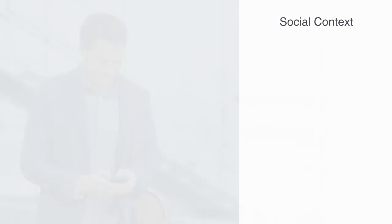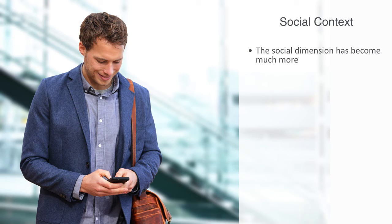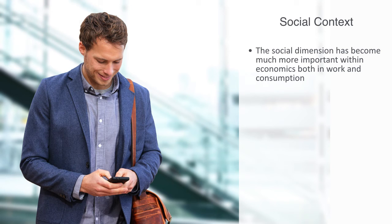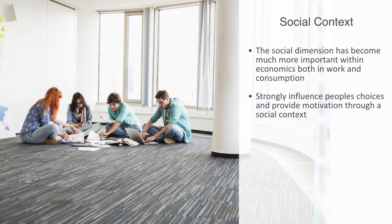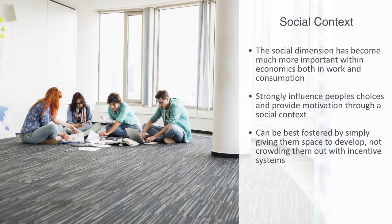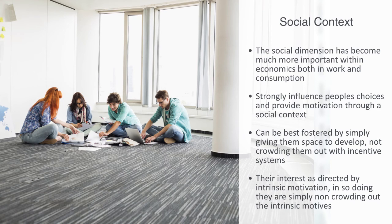The social context within which choices are made is just as important as the physical. With the advent of social networking, the social dimension has become much more important within economics, both in work and consumption. By simply connecting people and making social information available, this can strongly influence people's choices and provide motivation through a social context. Intrinsic motives are self-directional and can be best fostered by simply giving them space to develop — that is, not crowding them out with incentive systems. We see some companies like Google who, instead of offering an incentive for new innovations, simply give employees a day off every week to explore their interests as directed by intrinsic motives, thereby not crowding out those intrinsic motives.